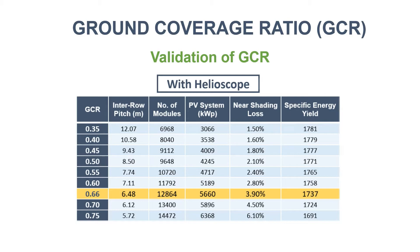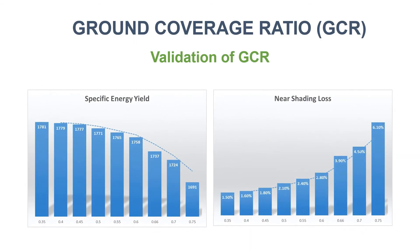The highlighted row where the GCR is 0.66 is the system suggested value by Helioscope. Just notice: as GCR increases, the inter-row pitch decreases and shading loss increases. The direct impact is in the energy yield, where energy production is falling significantly in spite of an increasing trend in PV capacity. The unit of specific energy yield is kilowatt-hours per kilowatt-peak per square meter per year.